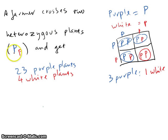You can probably tell that the big P is the dominant, so the little P is the recessive. So this farmer crosses two of those plants, and then he gets 23 purple plants and four white plants. The question is, is this normal? Is it following the Mendelian law? So you are going to have to apply the chi-square test for this problem.